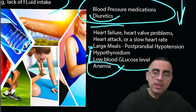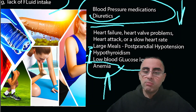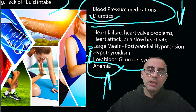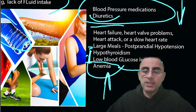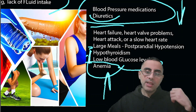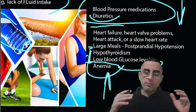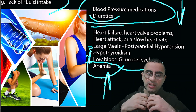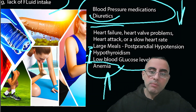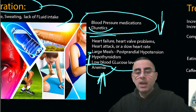Anemia is also an important cause, as many women have iron deficiency anemia. In anemia, there is a lack of red blood cells and therefore less oxygen delivered to tissues. The body tries to compensate by dilating blood vessels to improve blood flow, but this dilation causes blood pressure to drop.